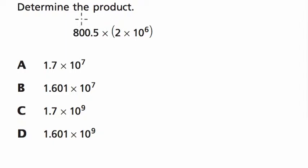Okay, so when they say determine the product, what do they mean? They mean multiply. And we've got three numbers: 800.5, 2, and 10 to the 6. 10 to the 6 is a 1 followed by 6 zeros. That's a million.